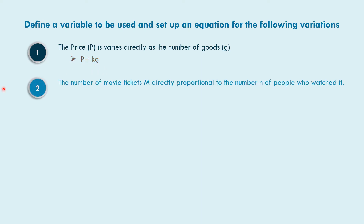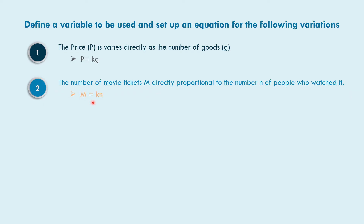How about number two? The number of movie tickets m is the first variable, directly proportional to the number n of people who watch it. So it means m is equal to k times n.